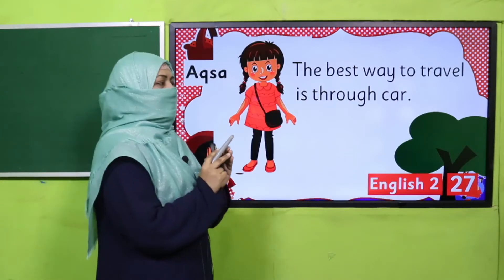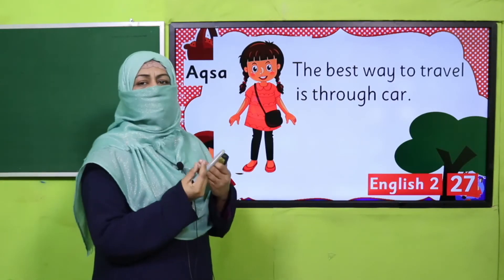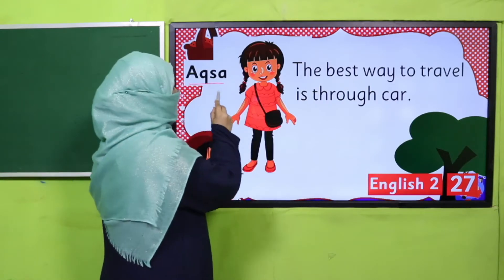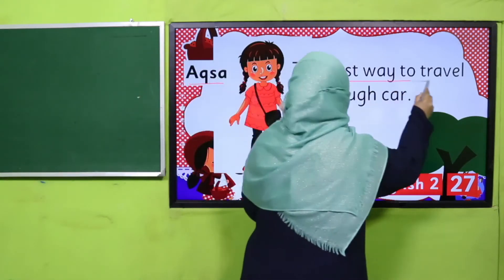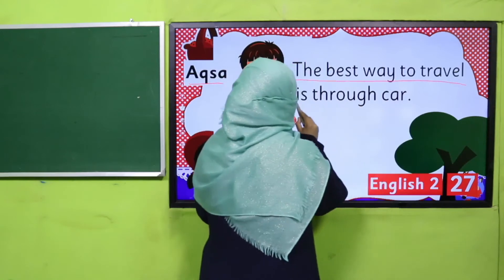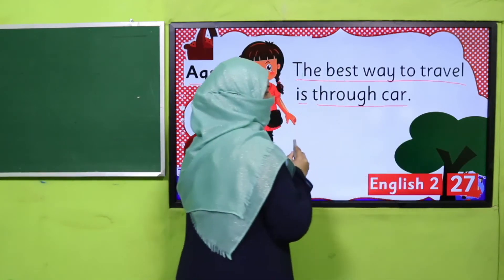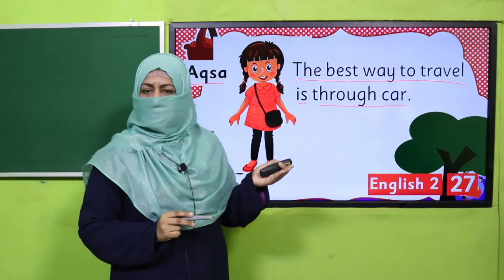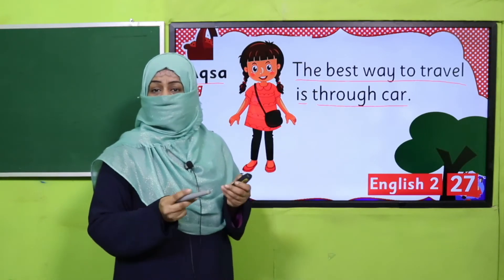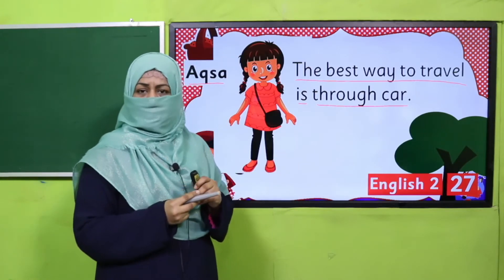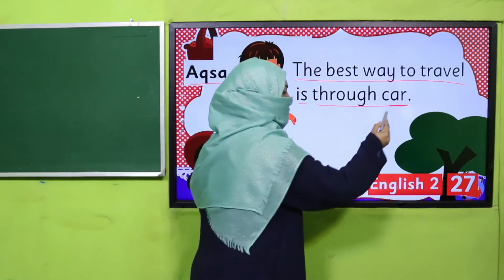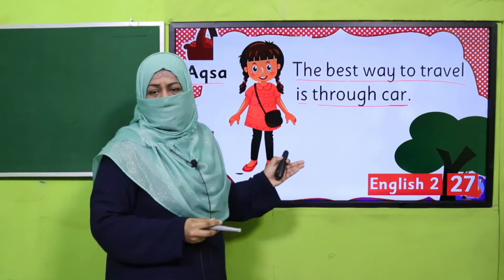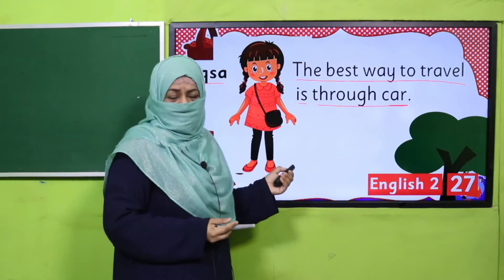The question is: which mode of transportation do you like? The first girl is Aksa — she says the best way to travel is by car. When we are taking turns and discussing, we should accept each other's point of view. If she likes to travel by car, it's okay. You should not say 'no, it's boring.' She likes it, and that's fine.